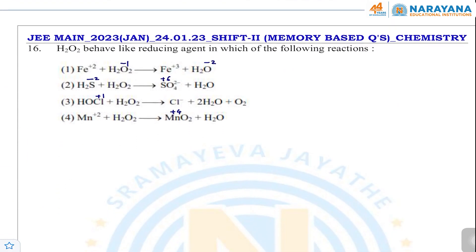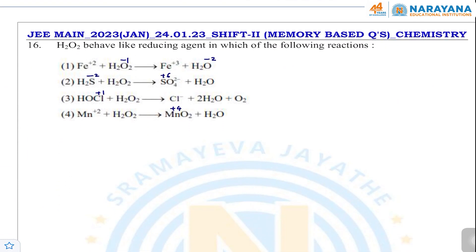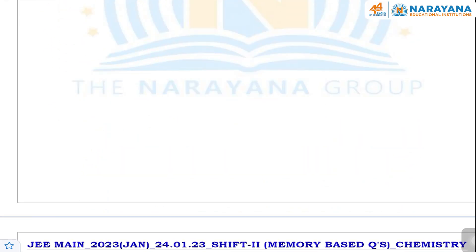The next question: in which reaction does H2O2 behave as a reducing agent? In reaction 1, Fe²⁺ → Fe³⁺ — H2O2 is the oxidizing agent. In reaction 2, H2S → sulfate — H2O2 is the oxidizing agent. In reaction 3, HOCl: Cl goes from +1 to −1 — here H2O2 is acting as the reducing agent. In reaction 4, Mn²⁺ → Mn⁴⁺ — H2O2 is oxidizing Mn²⁺. So H2O2 acts as a reducing agent in the third reaction.